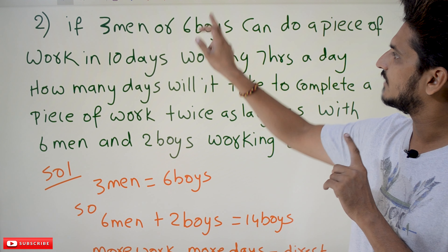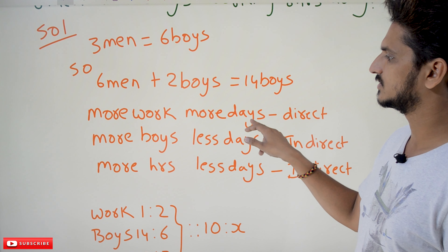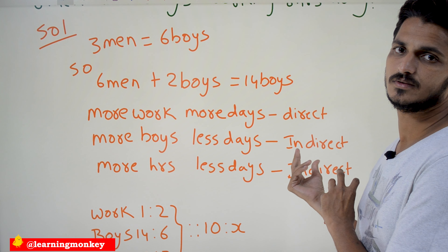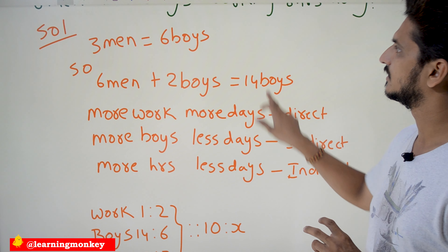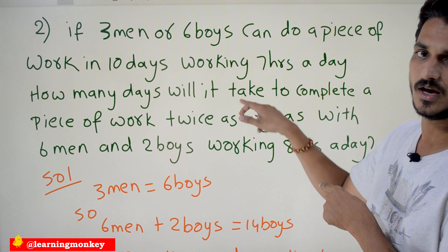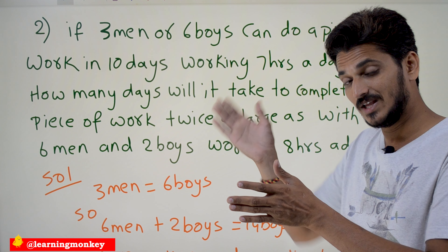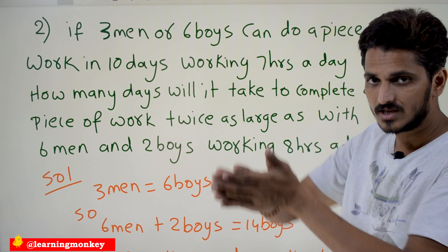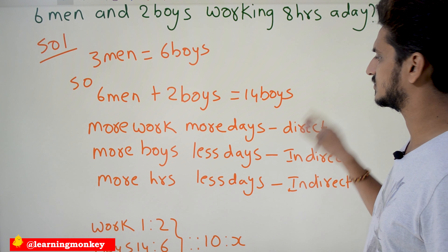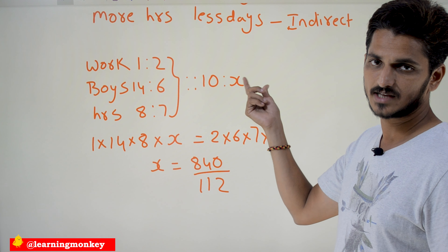Work is twice as large, so more work means more days. More boys means less days — indirectly proportional. More hours means less days — indirectly proportional. Work increases, days increase — directly proportional. So 10 is to x. Boys and hours ratios need to be reversed; work ratio stays as is: 1 is to 2 for work.